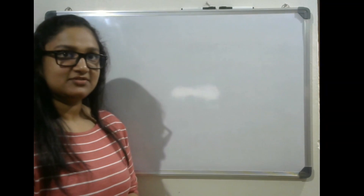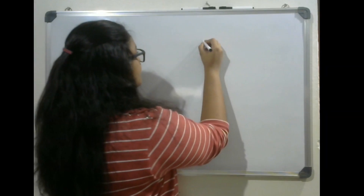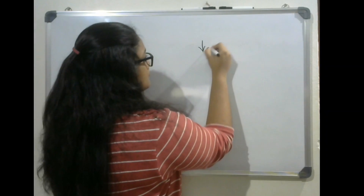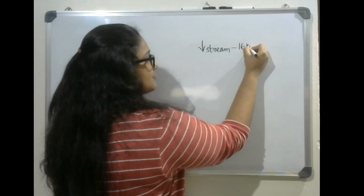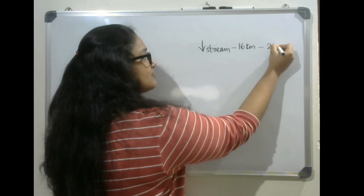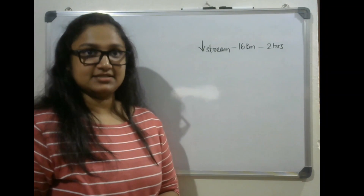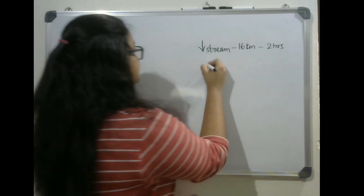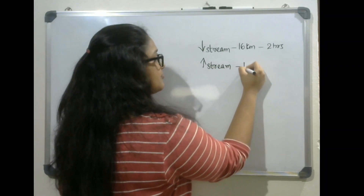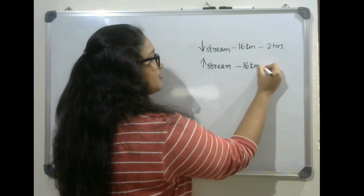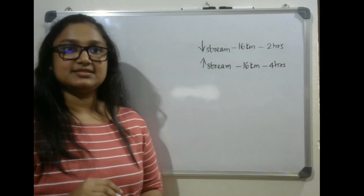A boat running downstream covers a distance of 16 kilometers in two hours, while for covering the same distance upstream it takes four hours. What is the speed of the boat in still water?